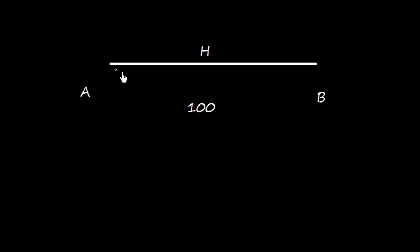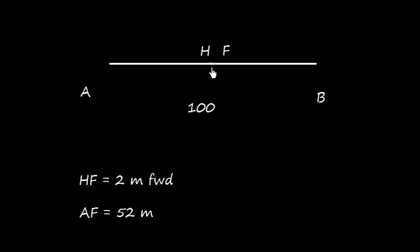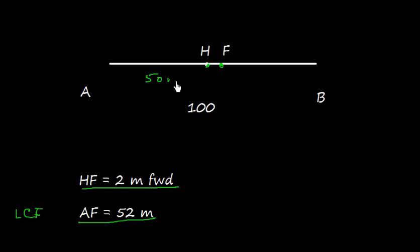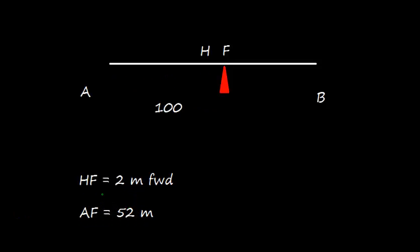Now let us proceed further with an example. Say this is a vessel of 100 meters length, and this is the midship. The center of floatation is 2 meters forward of midship. So LCF, the distance of center of floatation from aft, is 50 plus 2 equals 52 meters. We also know that the ship pivots about this point — the center of floatation.